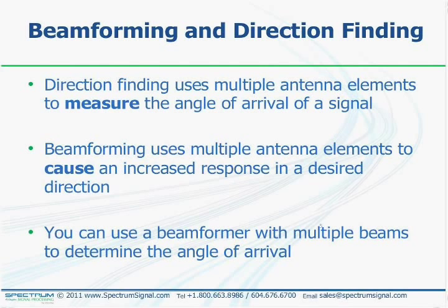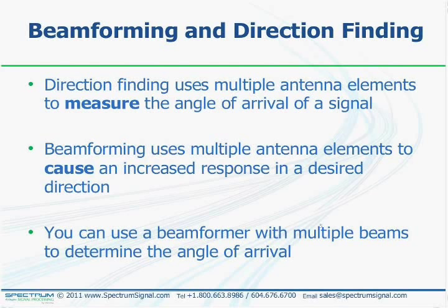Direction finding uses multiple antenna elements to measure the angle of arrival of a signal, done using phase differences between elements or even amplitude using directional antennas. Beamforming, on the other hand, uses multiple antenna elements to cause an increased response in a desired direction or a reduced response in another. A beamformer with multiple beams can determine the angle of arrival of a signal, so beamformers can be used in direction finding applications.